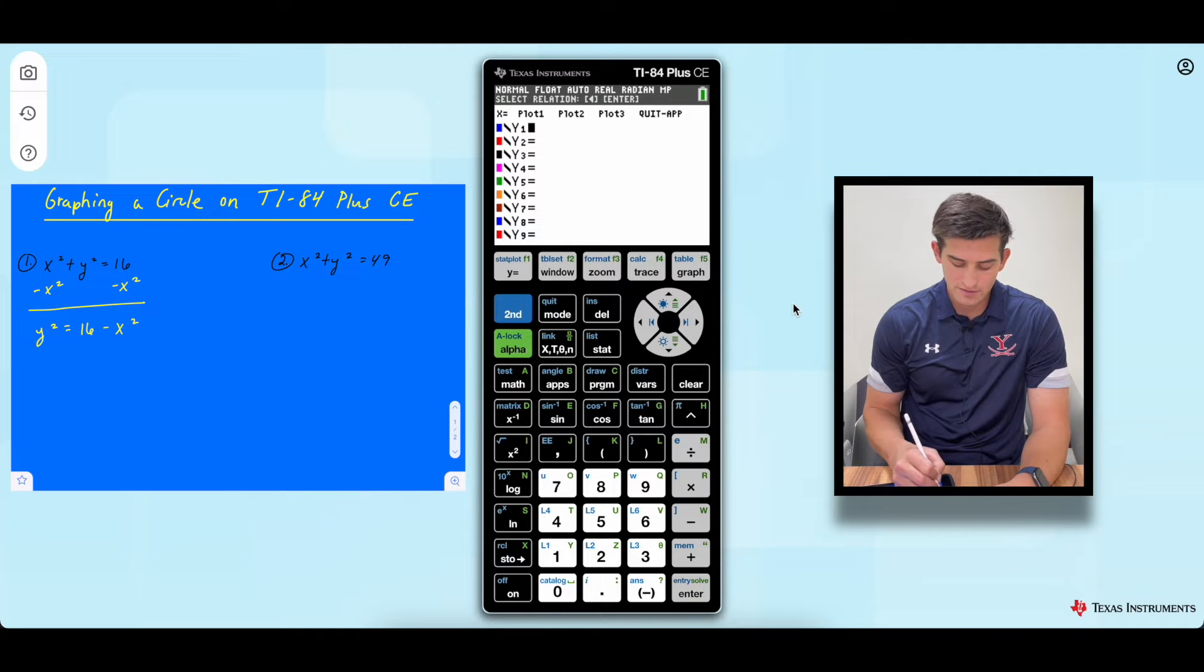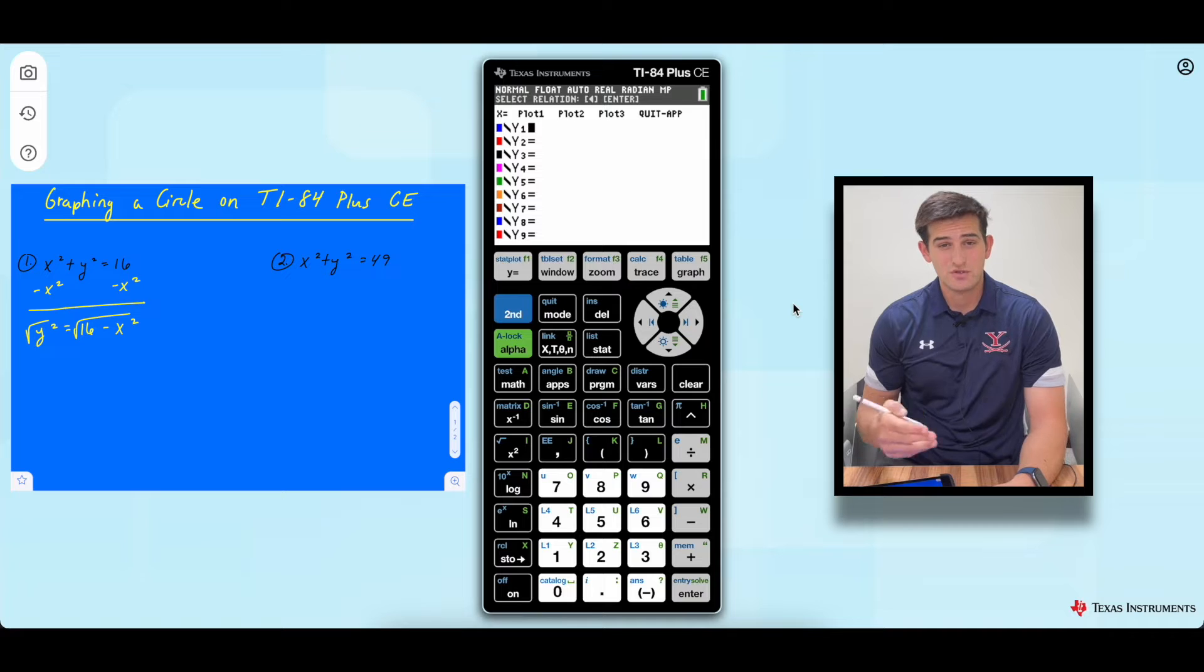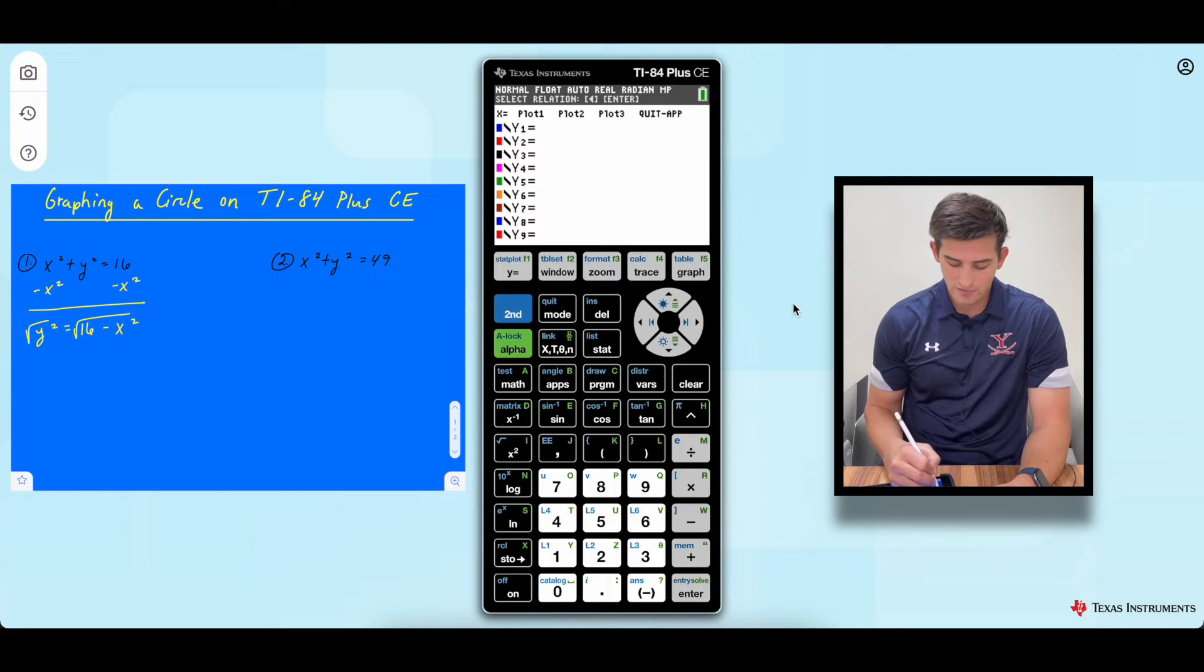Now, in order to solve it for y, we need to take the square root of both sides. Well, anytime we introduce the square root, it becomes positive and negative, right? So we have y is equal to positive and negative square root of 16 minus x squared.